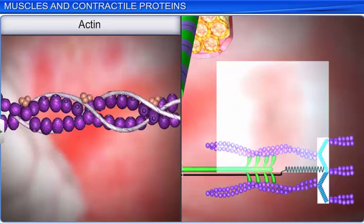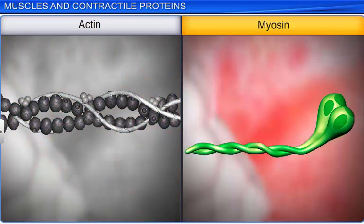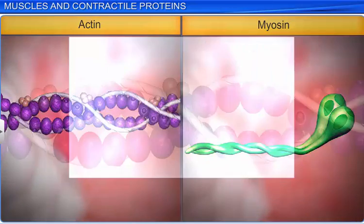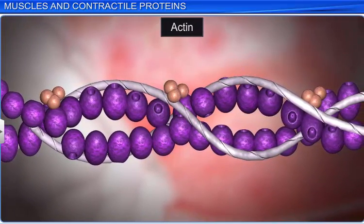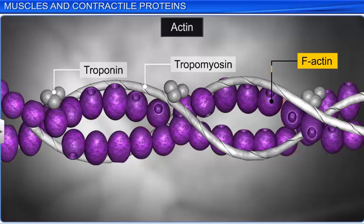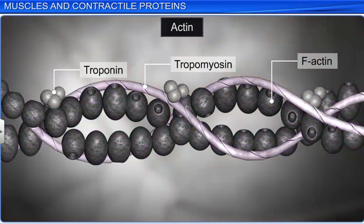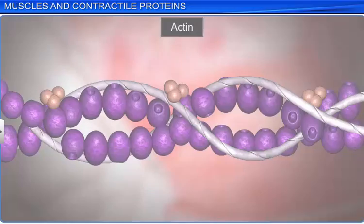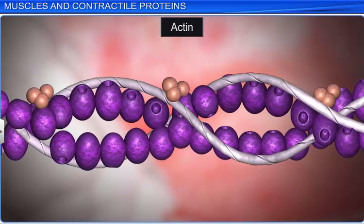The biochemical study of the two proteins, actin and myosin, shows that both have a complex structure. Each actin or thin filament consists of two F- or filamentous actins helically coiled to each other. Each F-actin is a polymer of monomeric G- or globular actin. These F-actins also have two filaments that run closely throughout their length, made of a protein called tropomyosin, which bears another complex protein called troponin at regular intervals. In a resting state, a subunit of troponin covers the active binding sites for myosin on the actin filaments.